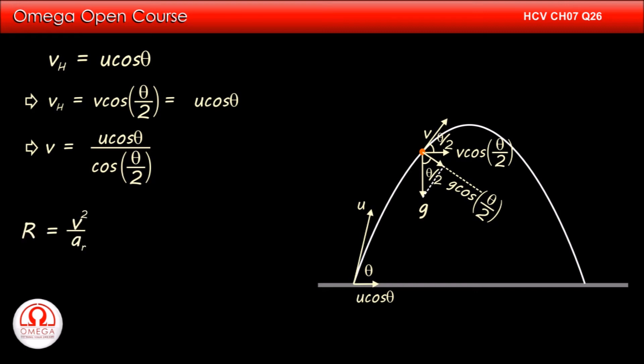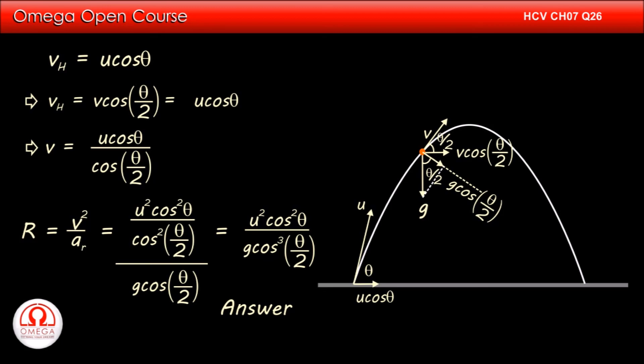Now, the radius of curvature is given by square of speed divided by the radial acceleration. Putting the values, we get r is equal to u square cos square theta divided by cos square theta by 2 divided by g cos theta by 2. Simplifying, we get r is equal to u square cos square theta divided by g cos cube theta by 2. This is our answer.